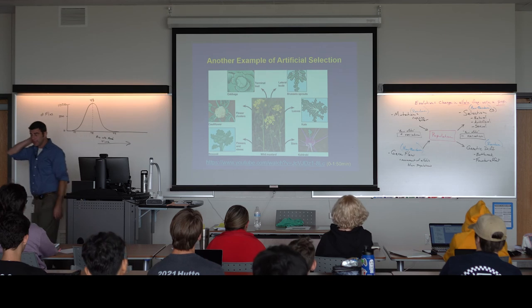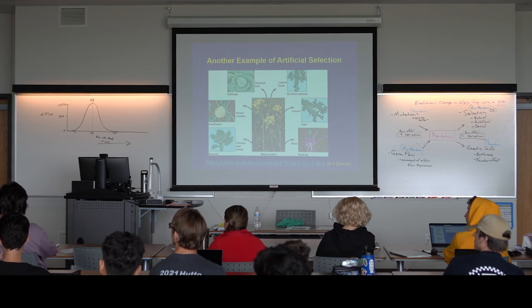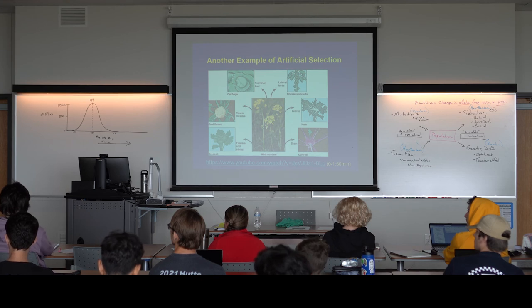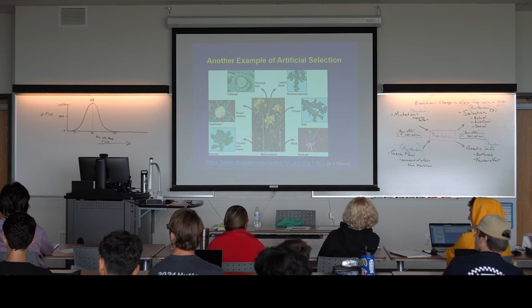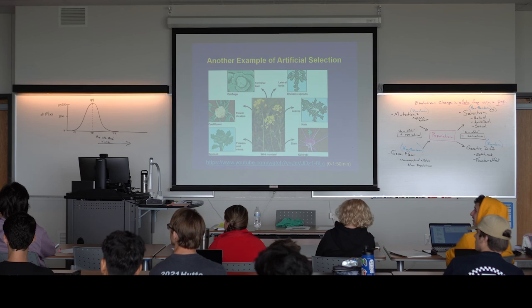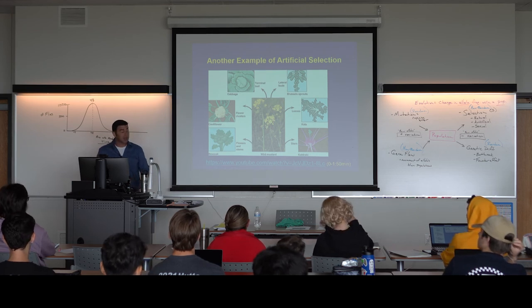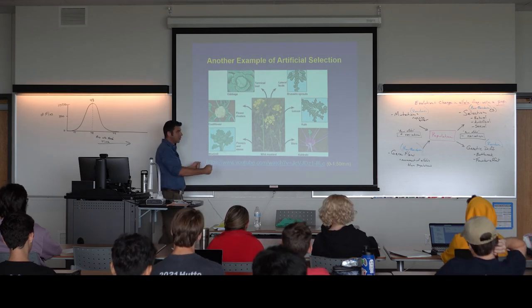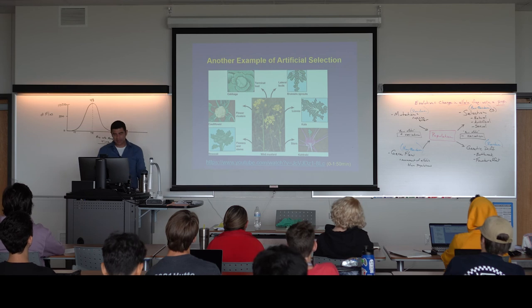Not only animals but plants have been pulled in different directions by humans, leading to a wide variety of table vegetables that all have their common ancestry in one type of plant. We've got one more short video to watch because the last type of selection we need to introduce is sexual selection. What's very interesting about sexual selection is that it's almost counterintuitive to natural selection — if males and females live in the same habitat, why is it that certain ornaments only appear on males and not females?